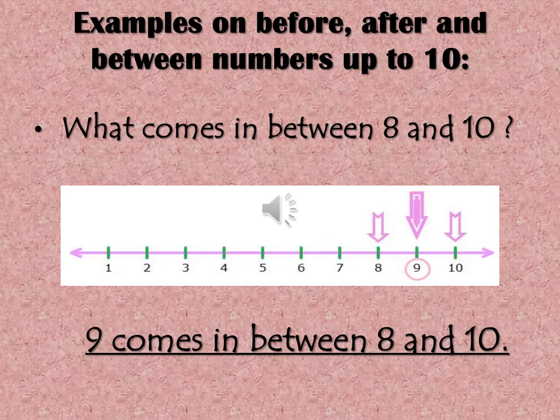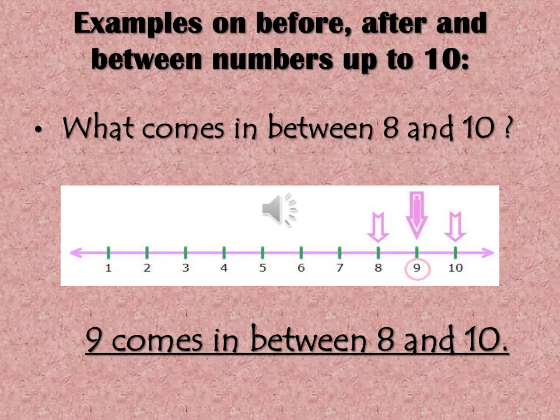What comes in between eight and ten? Let's count on the number line: one, two, three, four, five, six, seven, eight, nine, and ten. What is the middle number between eight and ten? It's nine. And what is the after number? Ten. And the before number is eight. So nine comes in between eight and ten.